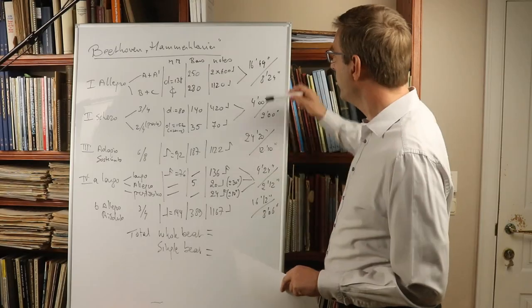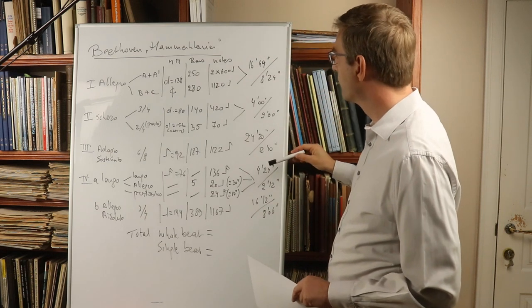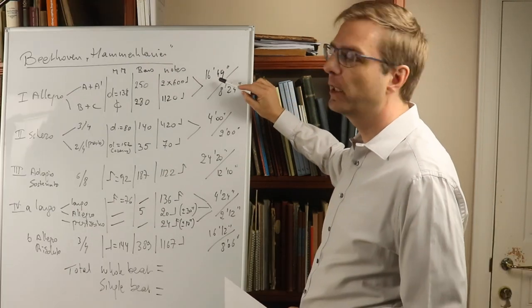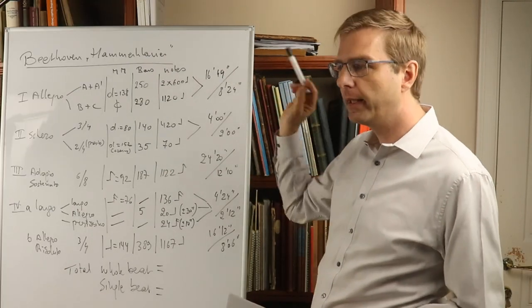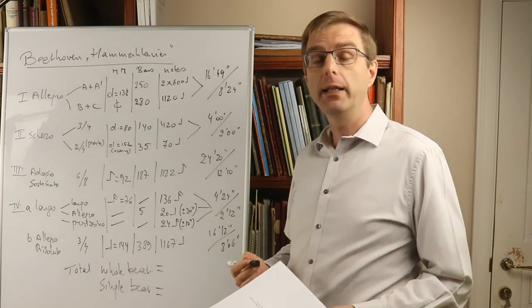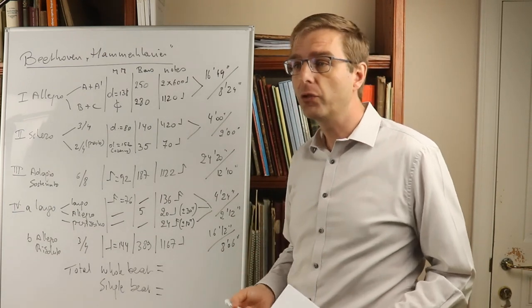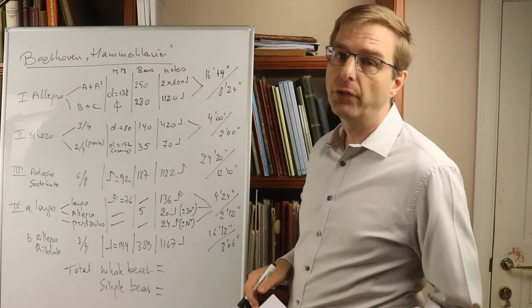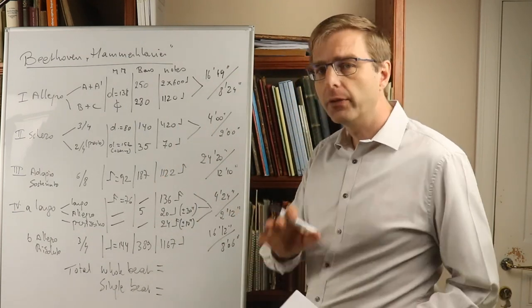So here are the durations of the different parts in whole beat and in single beat. If you're not familiar with whole beat or single beat, I will link here a video. Whole beat is basically what I think the historical practice where the metronome indicates the subdivision of the note value in the metronome mark. I'm not going into detail here.